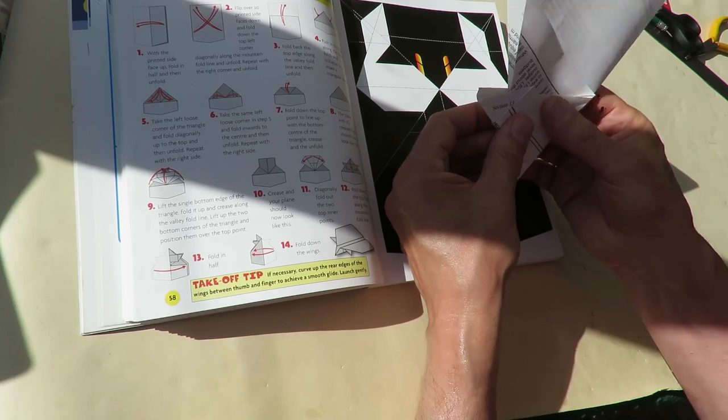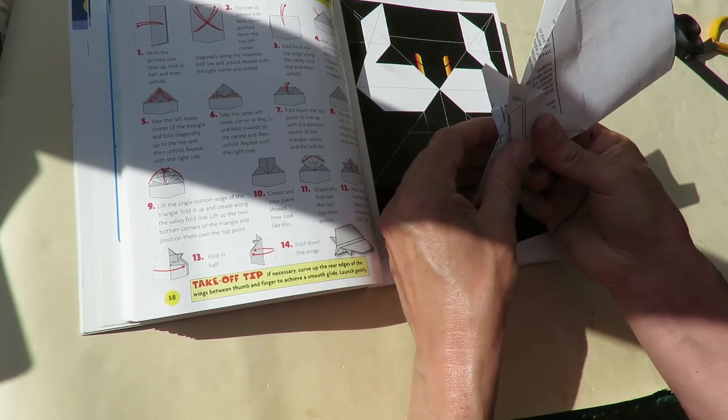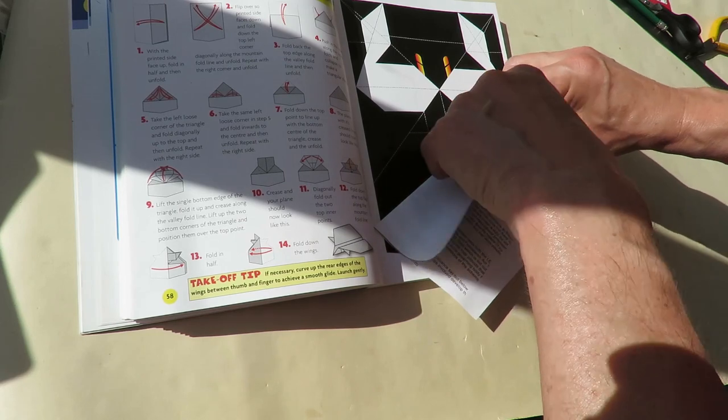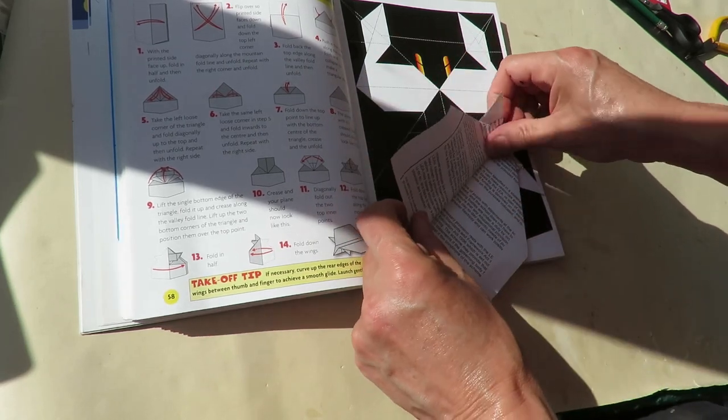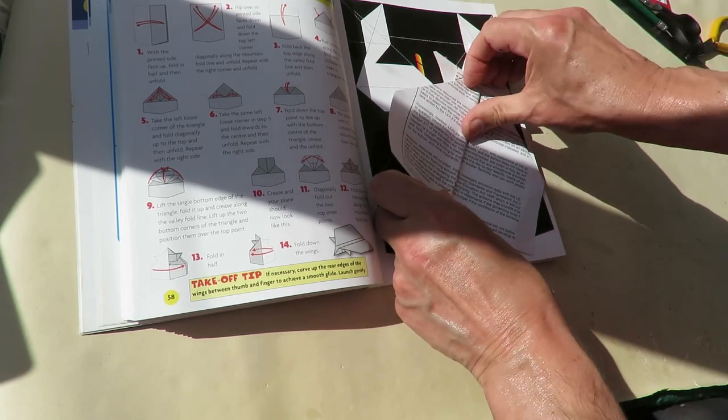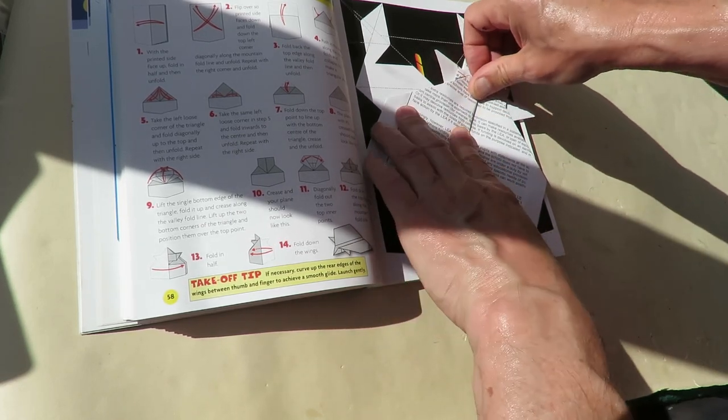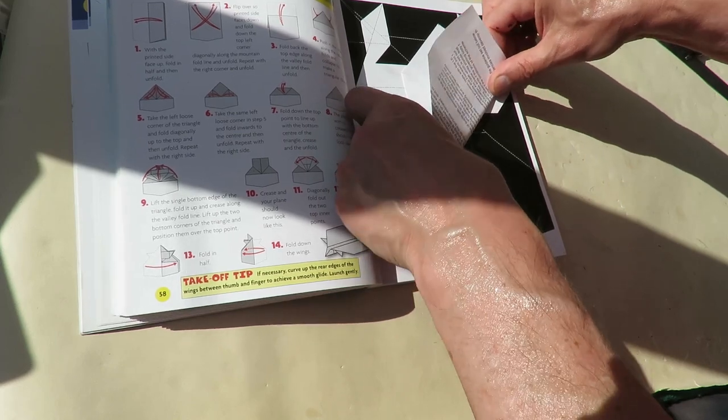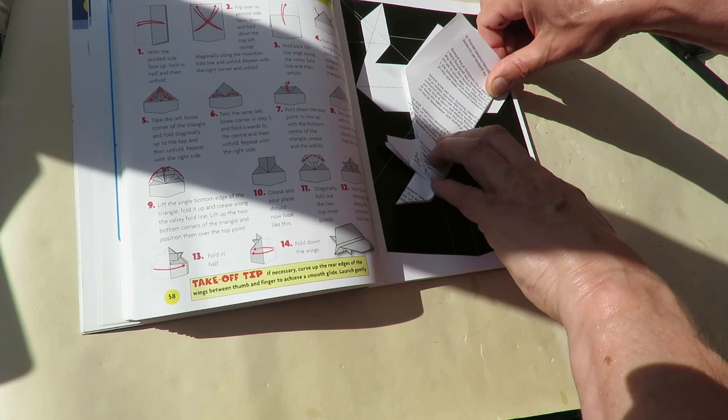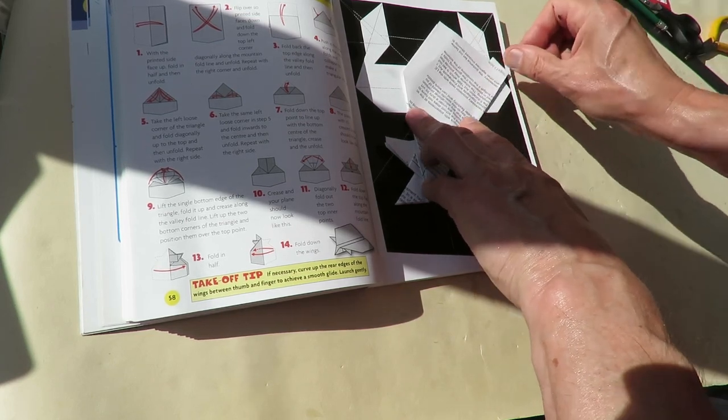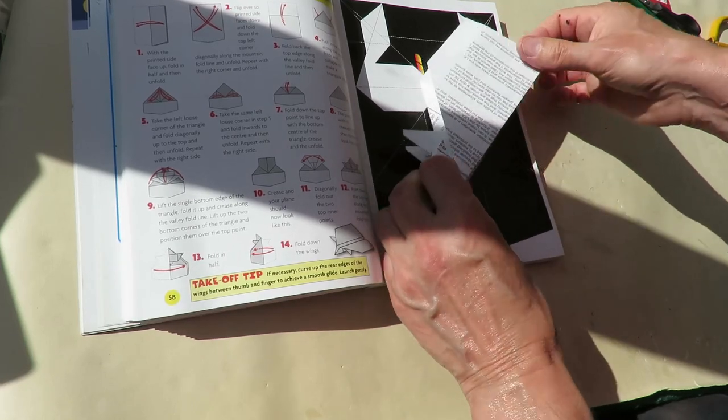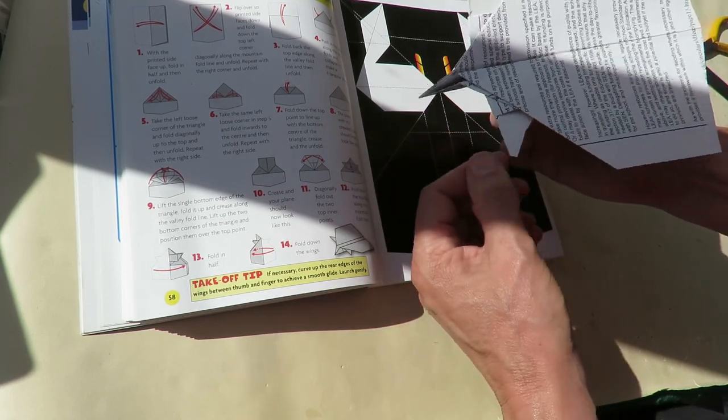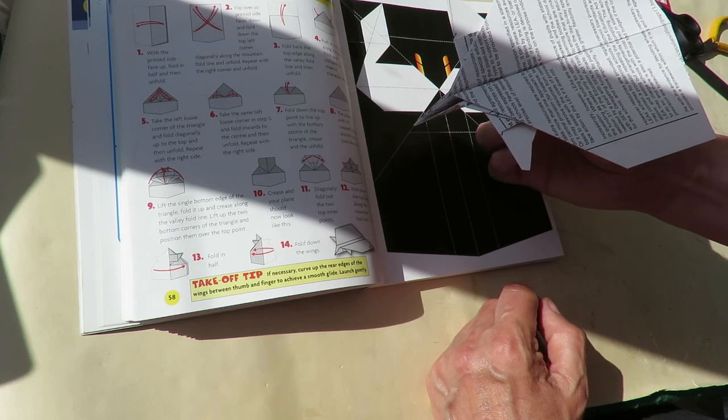Right so we've got that. Now fold all of that that way, and fold the rest of that back the other way. Okay. And that, that's it, with its little spiky bits at the front. Demon dive bomber.